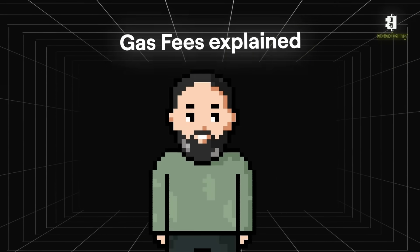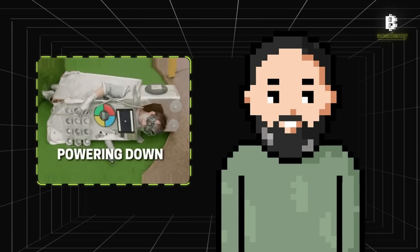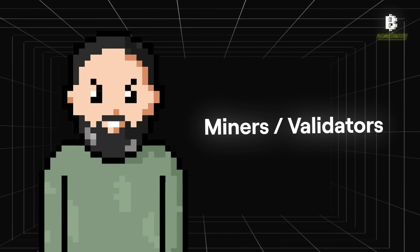Here's how gas fees work: every transaction on a blockchain needs to be verified and added to the network, and that takes computational power. These fees are basically the payment to the computers—aka miners or validators—who are grinding behind the scenes.